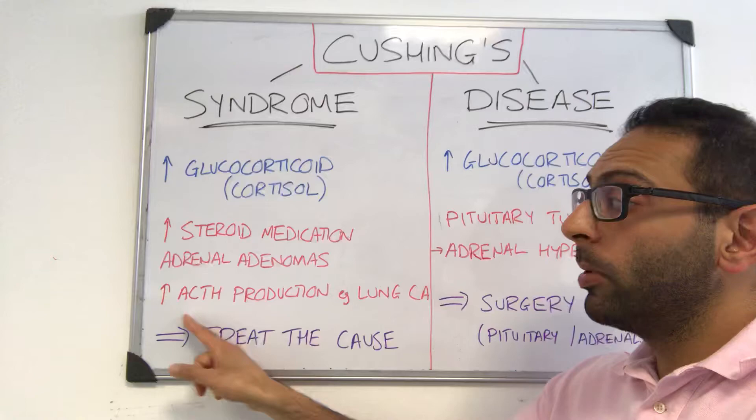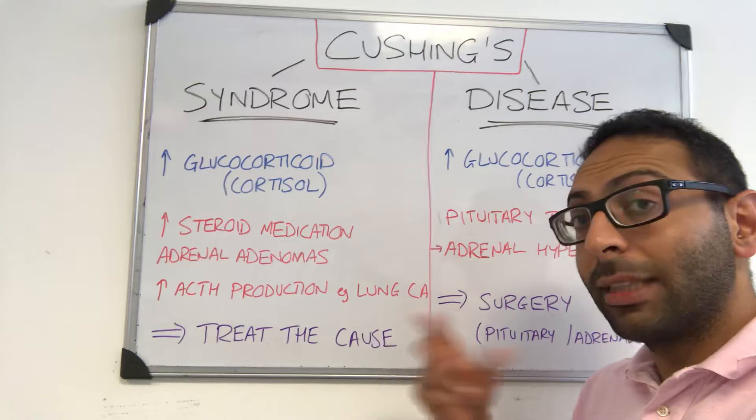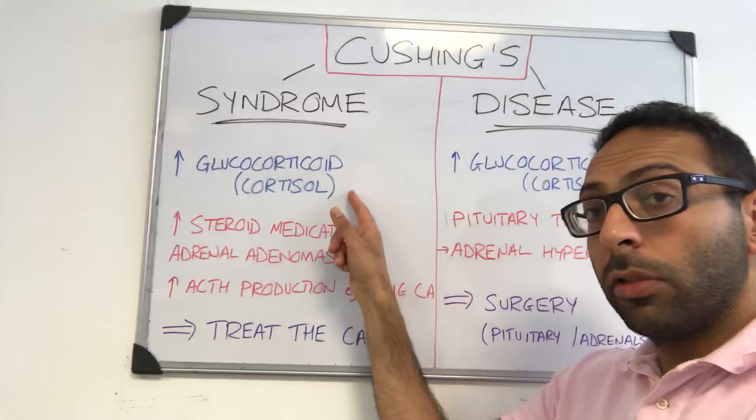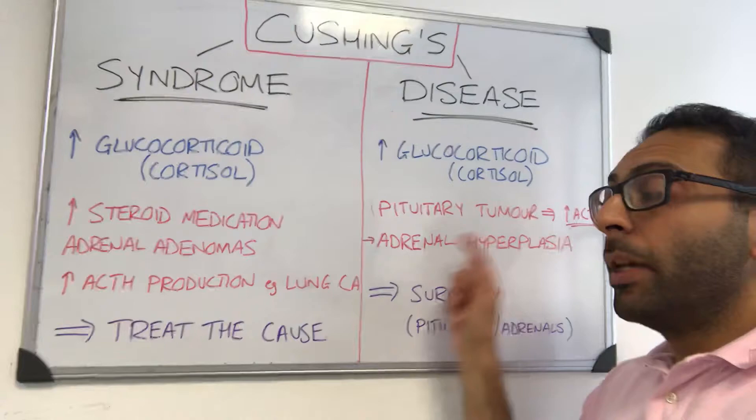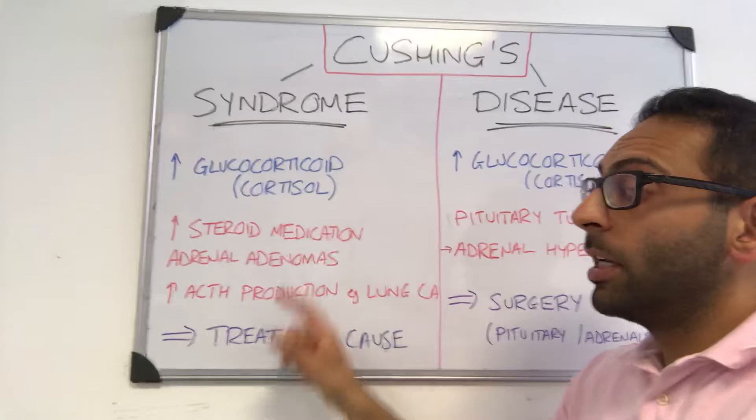It could be because there's another thing in the body causing too much ACTH, like a small cell lung cancer, leading to increased levels of glucocorticoid. It's pretty much any other reason you're getting increased glucocorticoid that is not due to a pituitary tumor leading to increased ACTH levels. So the treatment of Cushing's syndrome is very much dependent on why you're getting increased levels in the first place — there's not one specific cause.